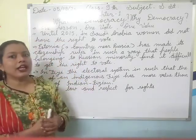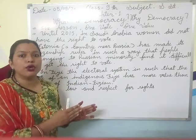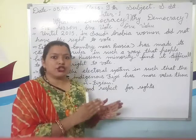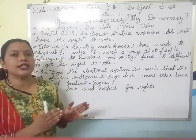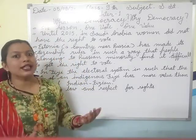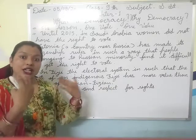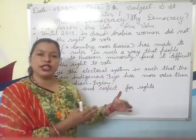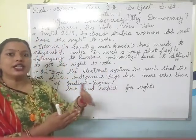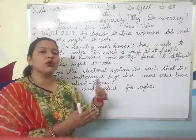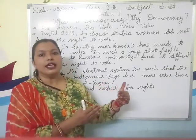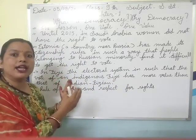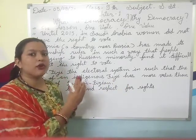Now what is the situation in Estonia? Because the Russian minority population finds it difficult to get the right to vote, there is no full democratic government. So in this case we can say that Estonia is not a fully democratic country.